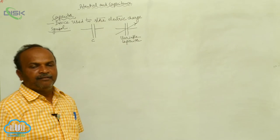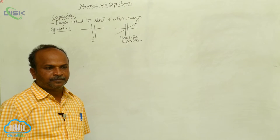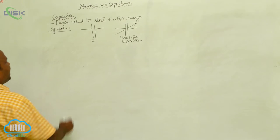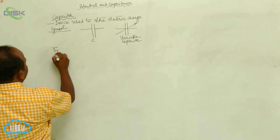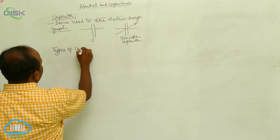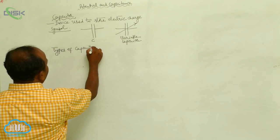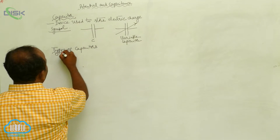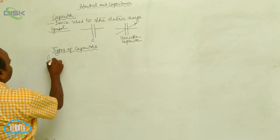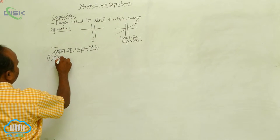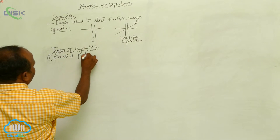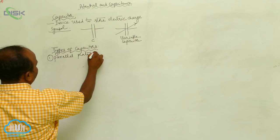Capacitor and variable capacitor. Now, types of capacitors. In the types of capacitors, the first one is the parallel plate capacitor.